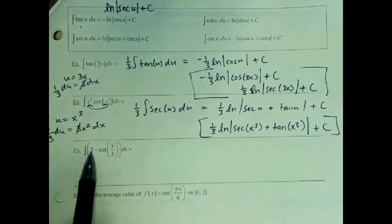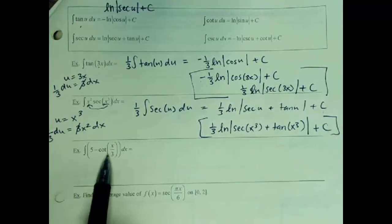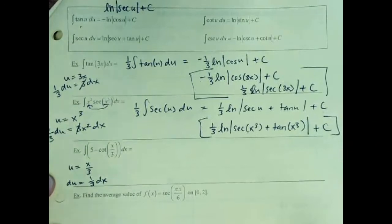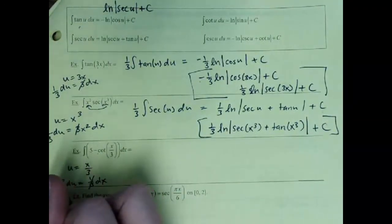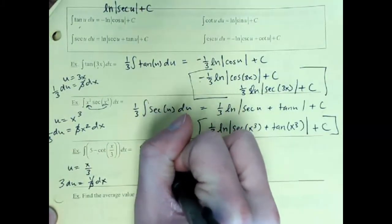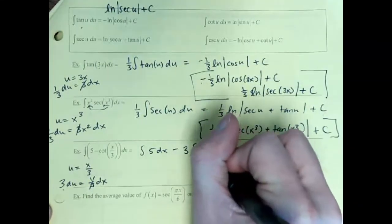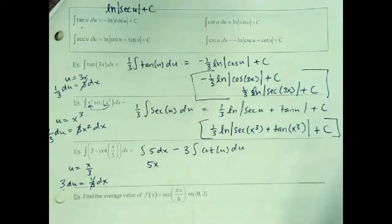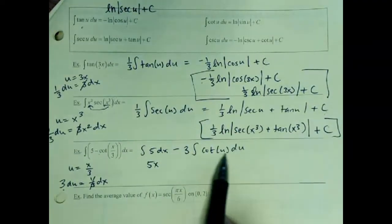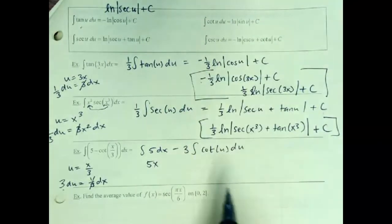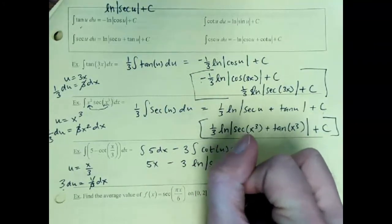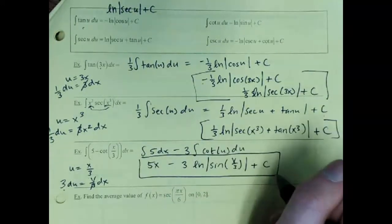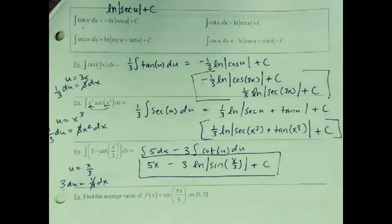Next: integrate 5 − 3cot(x/3). The 5 integrates simply to 5x — that's separate from the u-sub. For the cotangent part, set u = x/3; the derivative is (1/3)dx, so since we're missing the 1/3, the u-sub kicks out a 3. We get 5x − 3·(3) integral of cot(u) du = 5x − 9 ln|sin u| + C. Reverse substituting: 5x − 3 ln|sin(x/3)| + C. The integration of cotangent is just ln|sin|.